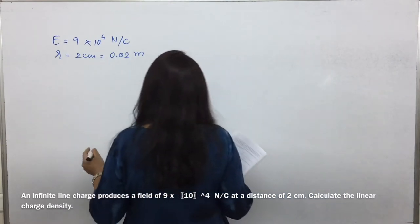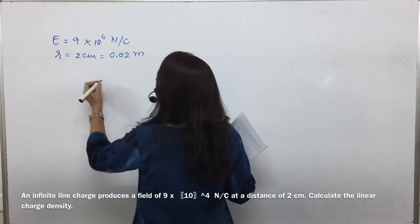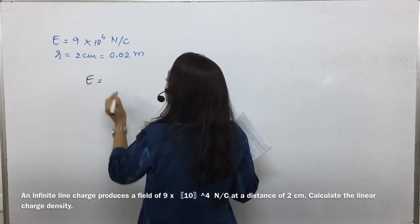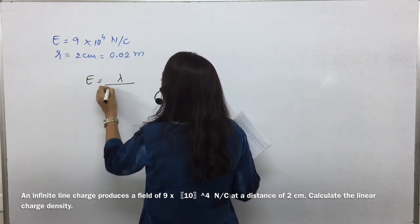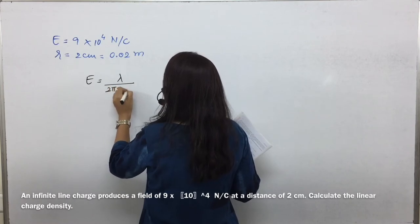For an infinitely long line charge, when we write the electric field formula, that is equal to lambda upon 2π epsilon₀ r.